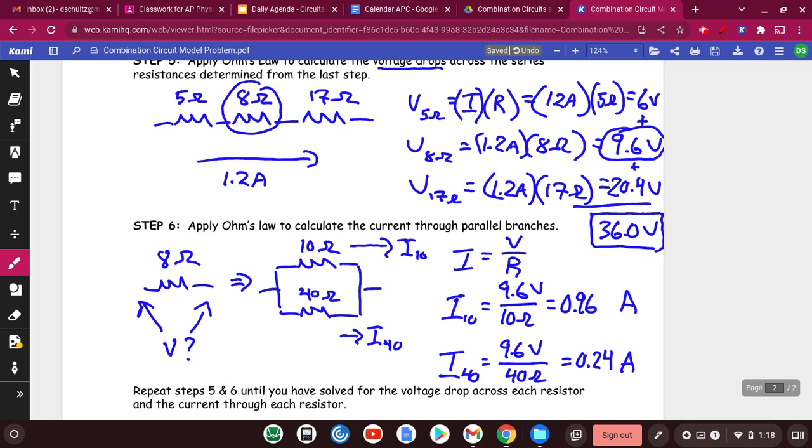Now, I'm glad that my current through the 10 ohms is much bigger. 0.96 amps is much bigger than 0.24 volts. That's good. In fact, it's four times greater.